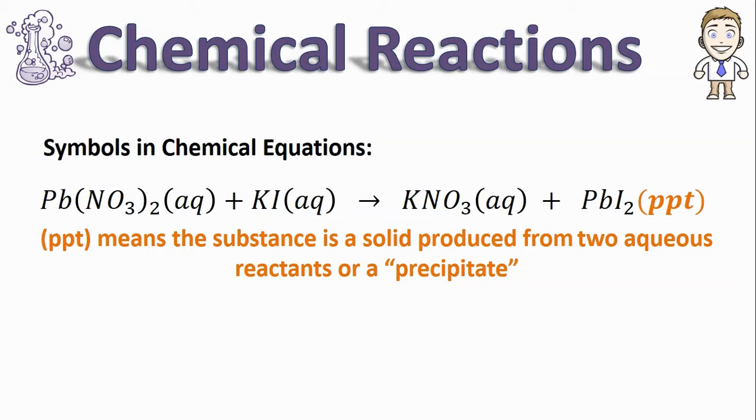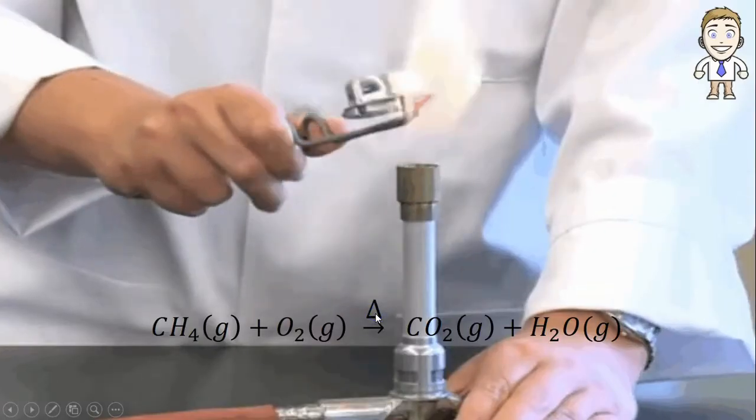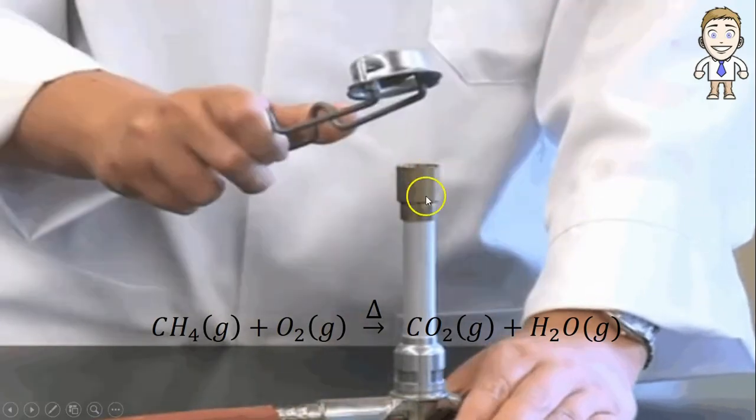The symbol for a precipitate is ppt. And here's one final symbol: in this equation, you can see a triangle, or the Greek letter delta, that's written on top of the arrow. When you see this, it means that heat needs to be supplied to make the reaction happen, much like when you have to light a Bunsen burner using a striker.